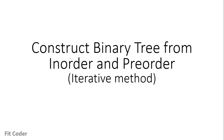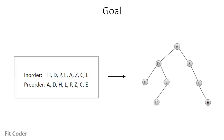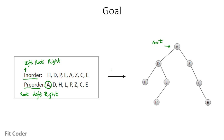In this video, we will discuss how we can construct a binary tree from a given in-order and pre-order traversal using the iterative method. Given this in-order and pre-order traversal, the goal is to construct a binary tree. In-order traversal is left, root, and right; pre-order is root, left, and right. The first node of the pre-order is the root node of the tree, so here A is the root node.